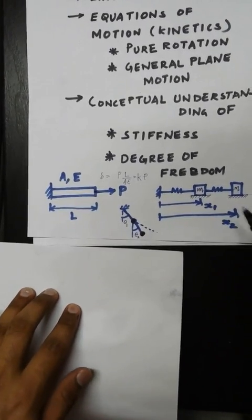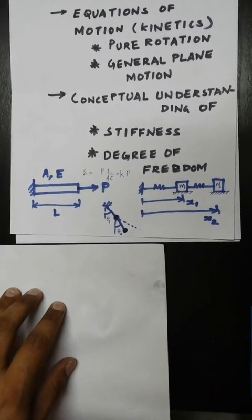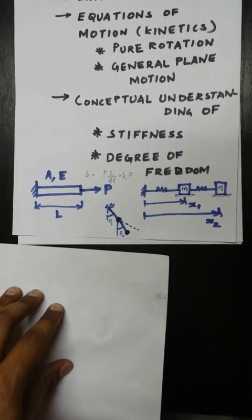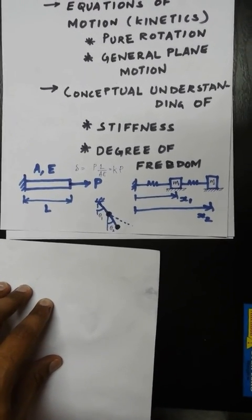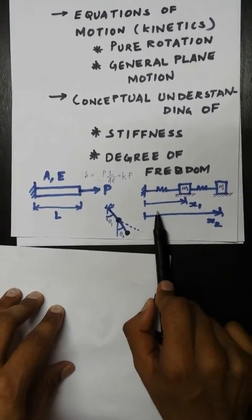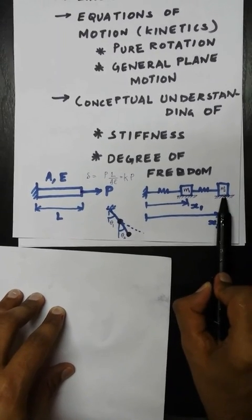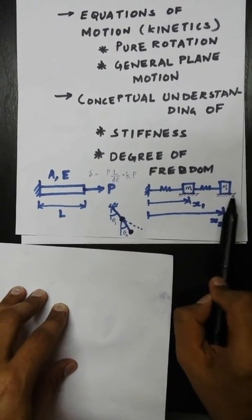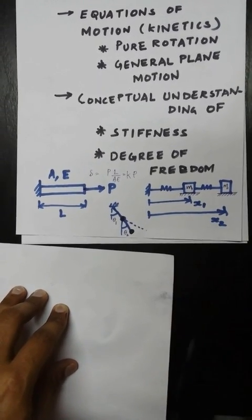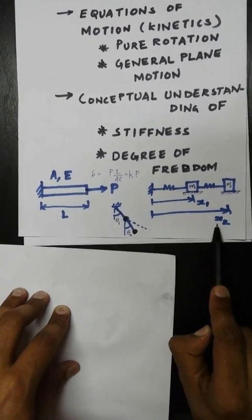Now coming to the concept of degree of freedom. Here you can see there are two masses. Degree of freedom means the number of independent coordinates that we need to specify to completely define the configuration of a system. If you specify only x1, this particular mass m2 can have any value of x2. It's mandatory that you specify particular values for x1 as well as x2 so that the system is totally defined.